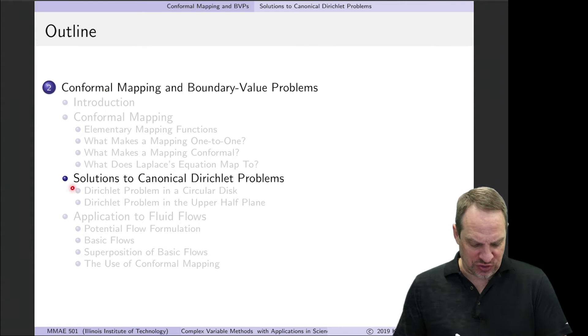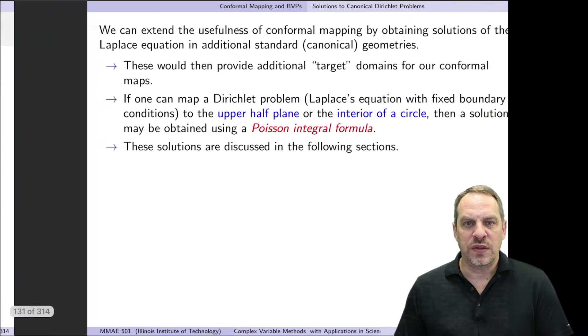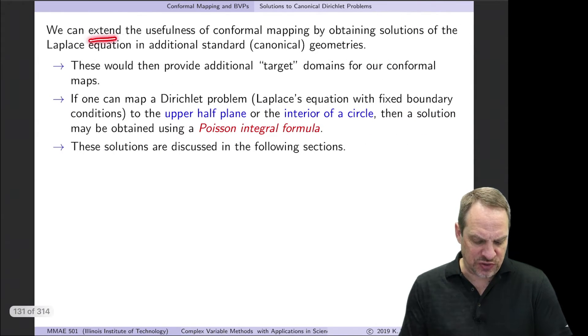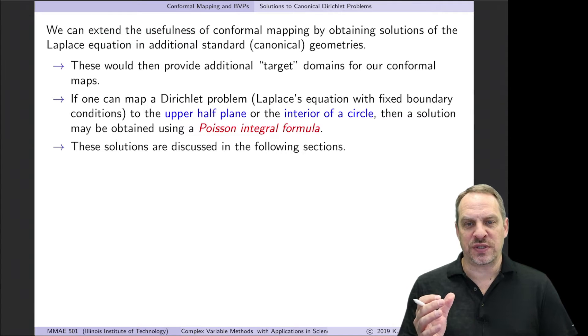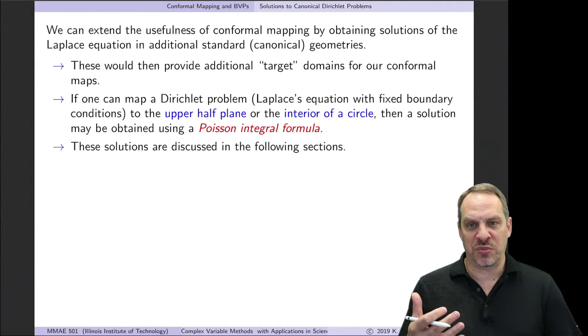In the next few videos, we're going to talk about solutions to canonical Dirichlet problems. These are two specific problems: the first is the Dirichlet problem in a circular disk, and the second is the Dirichlet problem in the upper half plane. The idea is that we want to extend the usefulness of this conformal mapping that we've been discussing to a broader set of domains.